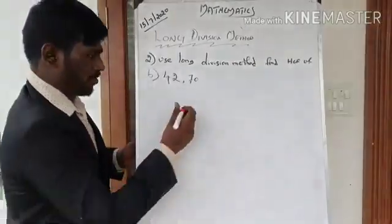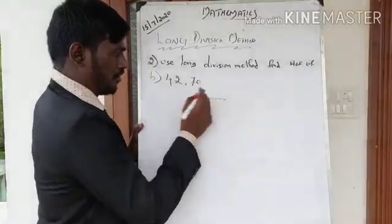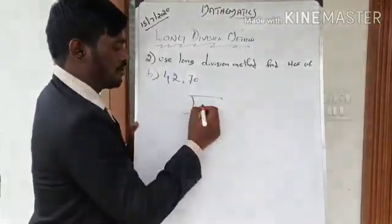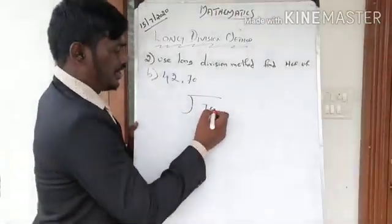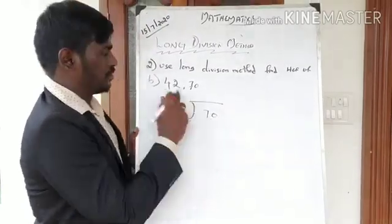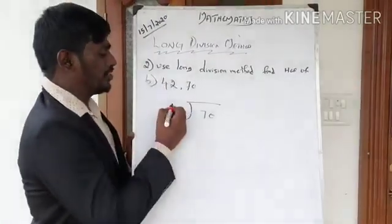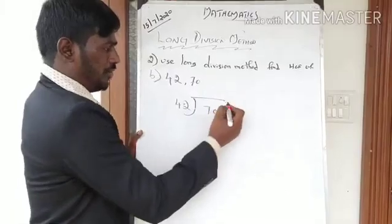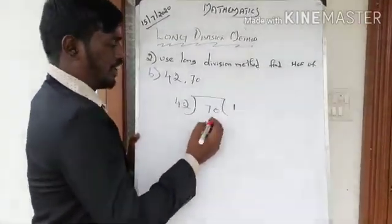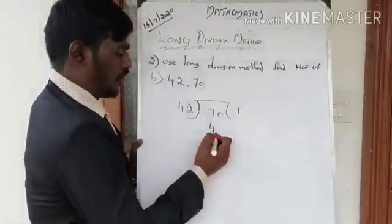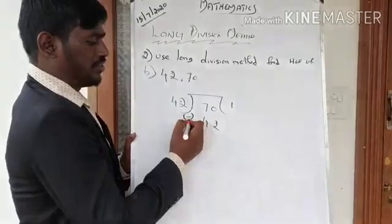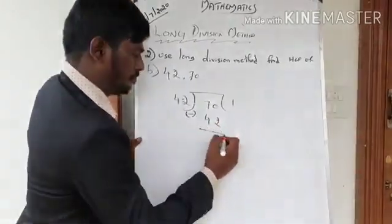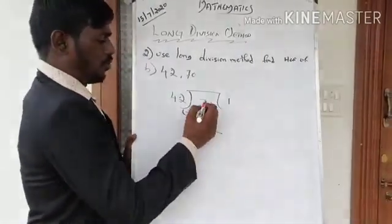Next example: find HCF of 42 and 70. Which is bigger? 70. So write 70 inside as the dividend and 42 as the divisor. Now divide: 42 ones are 42, so 42 goes once into 70.